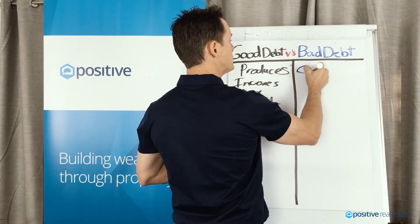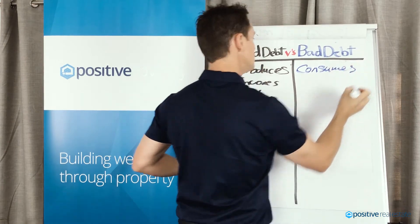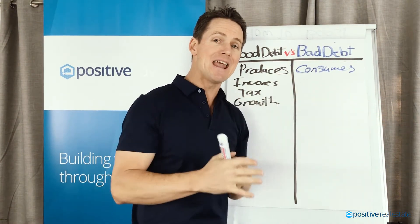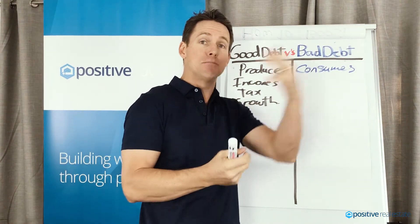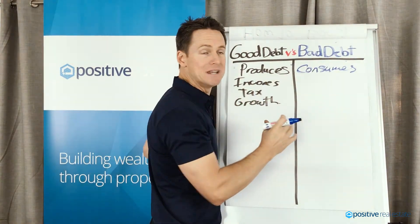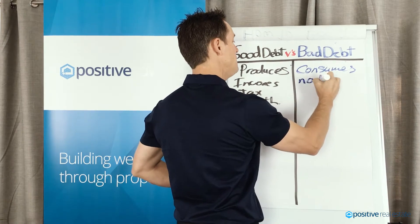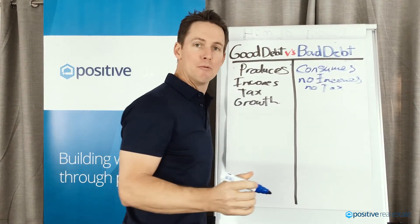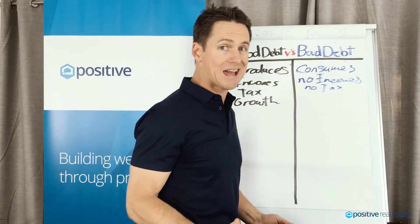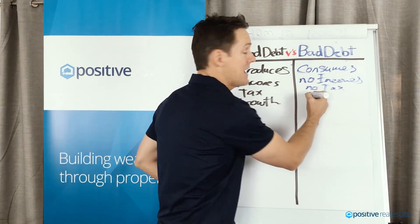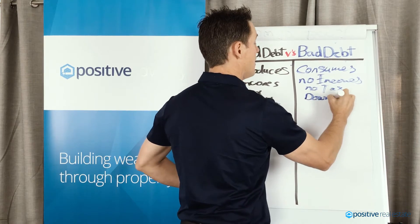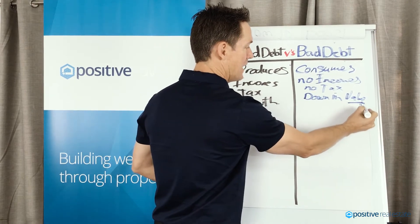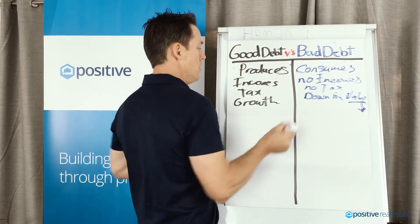Bad debt consumes something. It consumes your ability to borrow into the future and destroys your capacity to buy good quality assets. Consumer debt or bad debt creates no income and there are no tax deductions on consumer debt — like buying a new pair of shoes on your credit card. And 100% of the time, something we bought depreciates in value, goes down in value, not up in value over time.